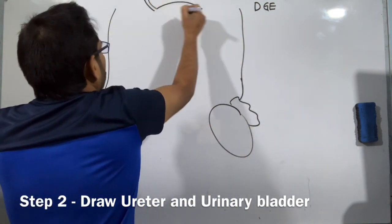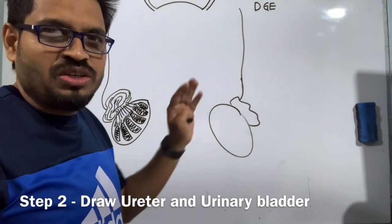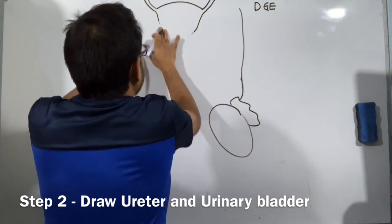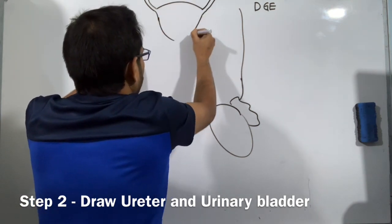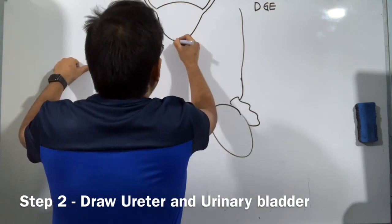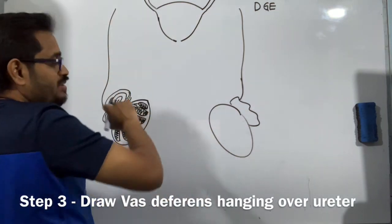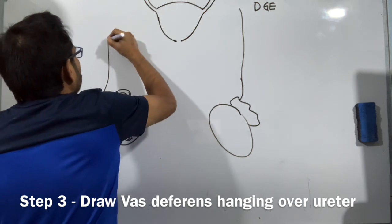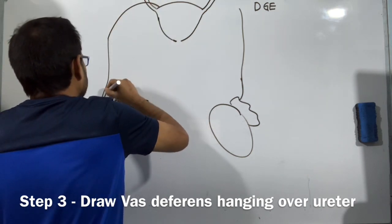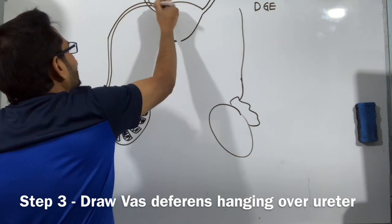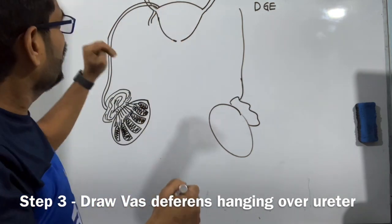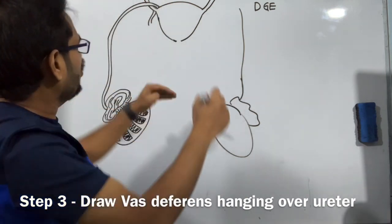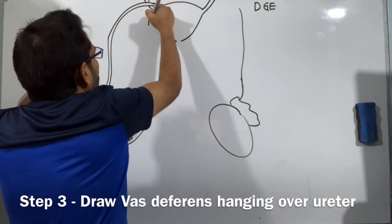These are the two ureters entering the urinary bladder, forming the bladder shape. From the middle of the bladder, this particular tube going up is referred to as vas deferens. It takes a turn over the bladder. It needs a support, so it is using the ureter as its support, and it just takes a turn over that and descends down. Same way on the other side also.